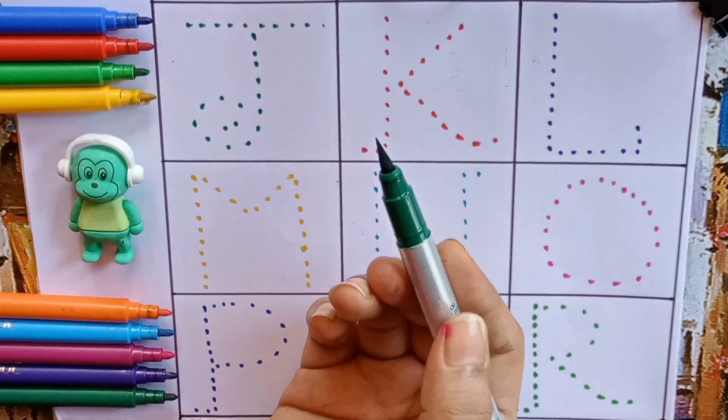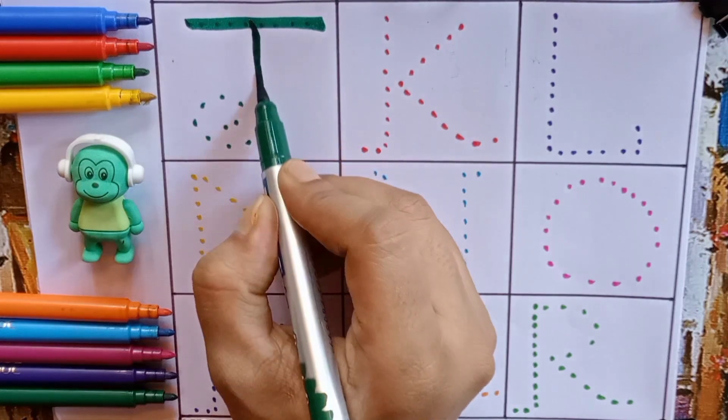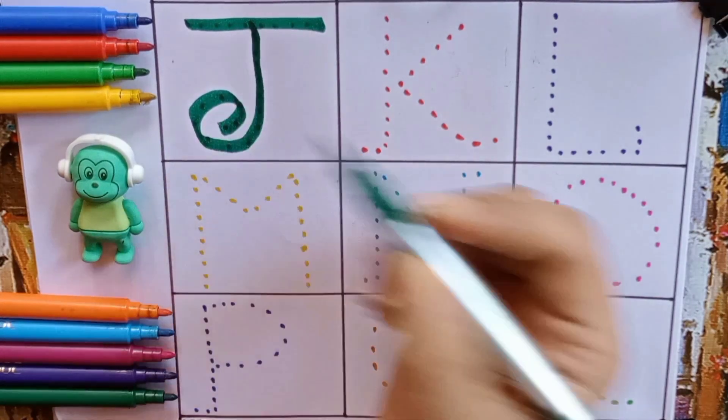Let's write alphabets. Green. J. J for joker, J for also jackfruit.